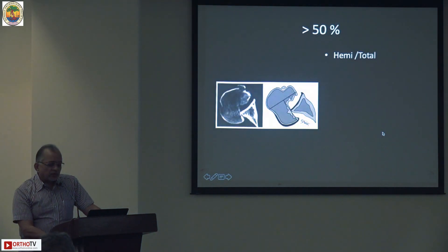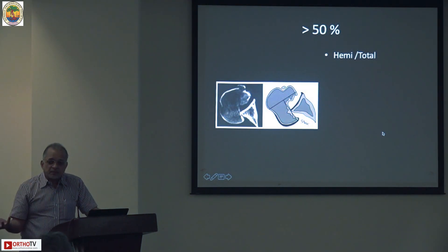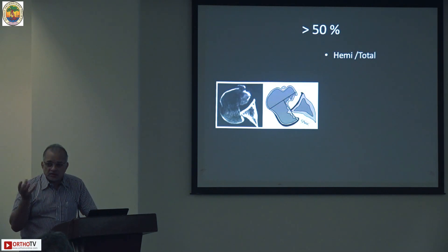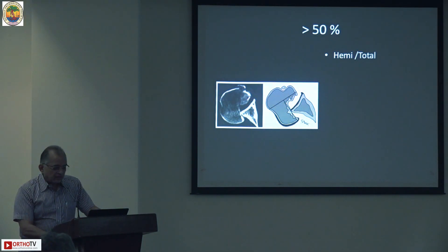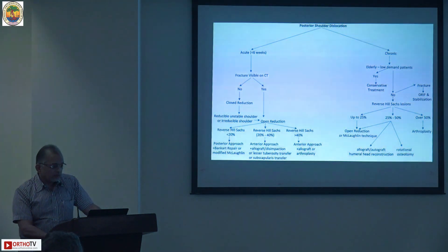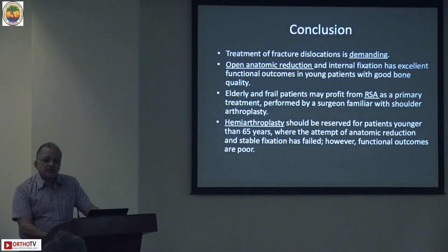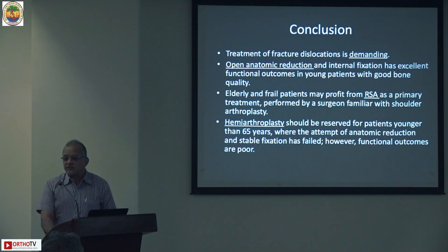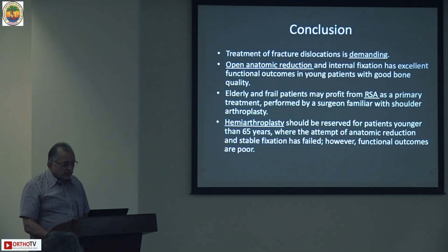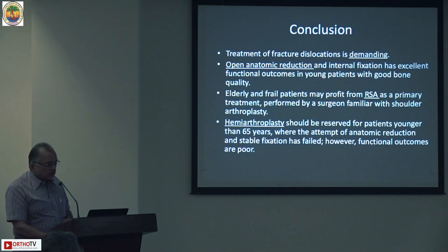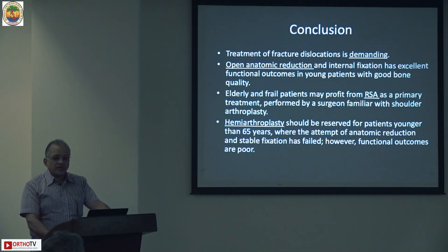If there is more than 50% defect in a younger individual, you have to do a derotation osteotomy. In an elderly patient, the answer is straightforward: either hemi or total shoulder replacement. This is in a nutshell how you should approach the treatment of posterior fracture dislocation.